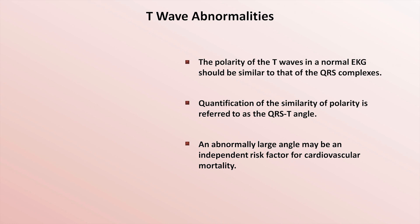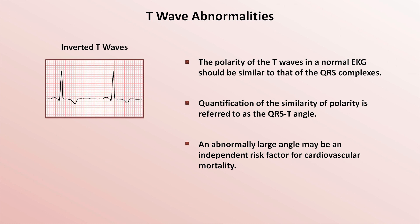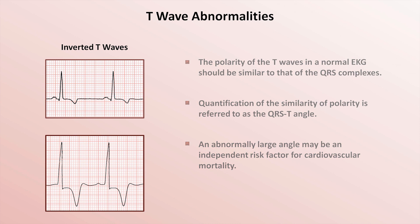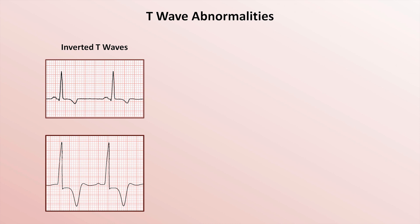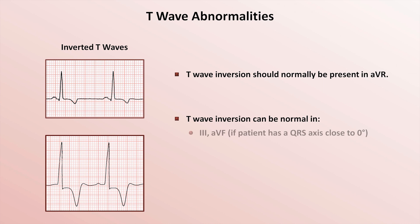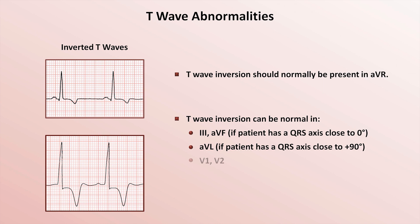There are a number of different abnormalities of the T-wave. First, they can be inverted — which may be relatively minor or very pronounced. Since T-waves should have a similar polarity as the QRS complexes, it can be predicted in which leads T-wave inversions may be normal. The T-wave in AVR should always be inverted. T-wave inversion can be normal in lead 3 and AVF if the patient's QRS axis is close to 0 degrees, also in AVL if the patient has a QRS axis close to positive 90 degrees. And T-wave inversions can be present normally in V1 and V2.